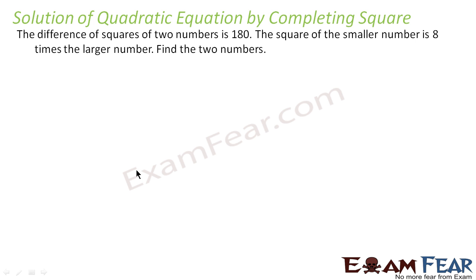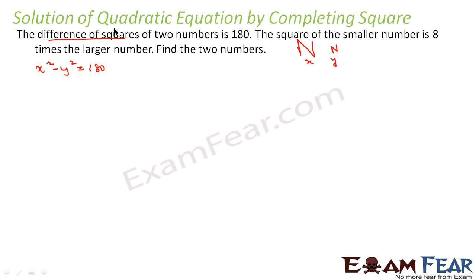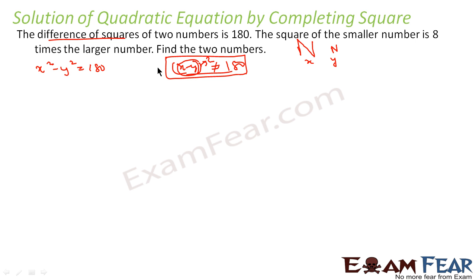Let's take one more example. The difference of squares of two numbers is 180. The square of the smaller number is 8 times the larger number. Let the larger number be x and the smaller number be y. The difference of squares — note: first square, then difference — is x² − y² = 180. Please note this is not (x − y)²; it is difference of squares, so we square first then find the difference.